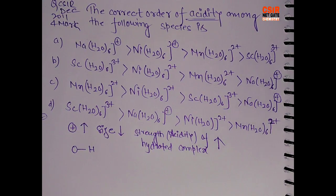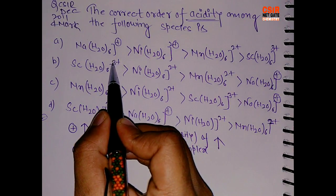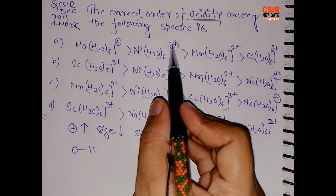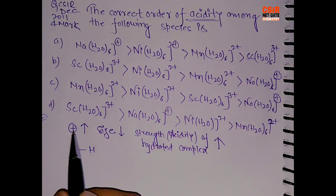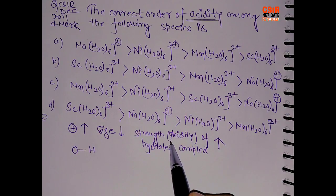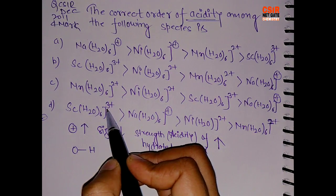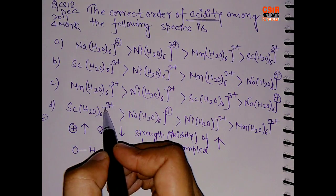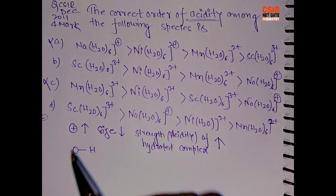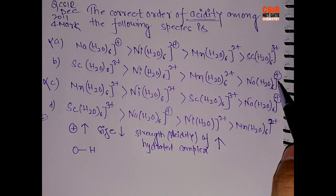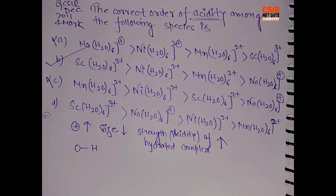First of all, see the highest charge we have is 3 positive. This is 2, this is 1. So we have 3, 2, 1. So 3, as I told you, will have the higher strength of acidity. So this can be the option or this can be the option. So these two can be the answer. First of all, let's neglect A and C. 3 positive, 3 positive highest. Where is the lowest? 1 positive and here 2 positive. So this is the lowest. So B is the correct answer.